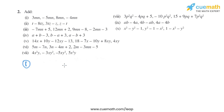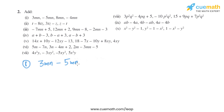As we can see, these are like terms — they all have the same variables m and n. So we can add them together: 3mn, and plus-minus becomes minus, so minus 5mn.